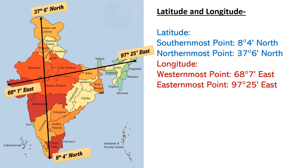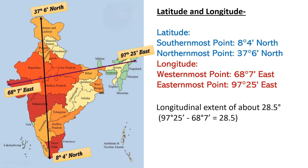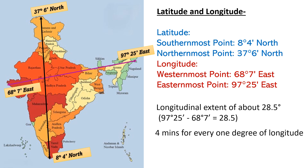Due to a longitudinal extent of about 28.5 degrees, there is a huge time difference between these two points — of about 2 hours. Because the local time of any place changes by 4 minutes for every 1 degree of longitude. If we multiply 28.5 by 4, we get 114.2 minutes, which is equal to approximately 1.90 hours, or roughly 2 hours.